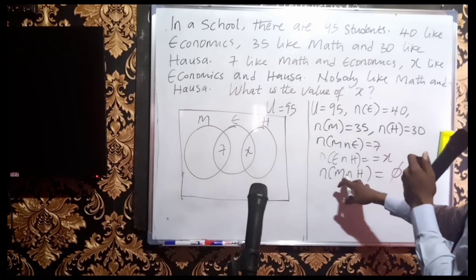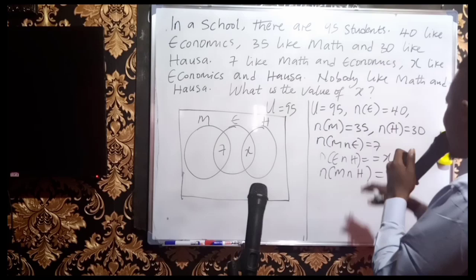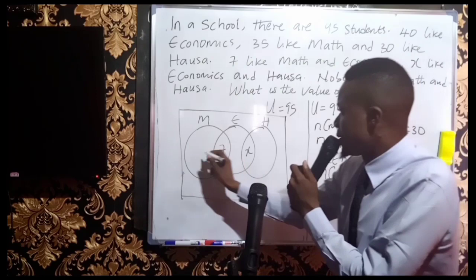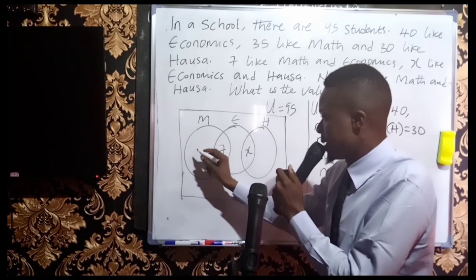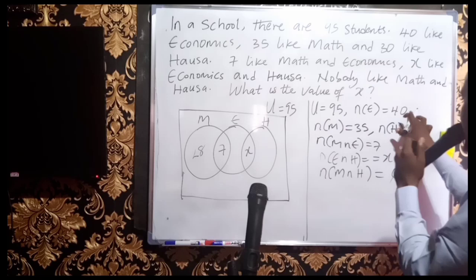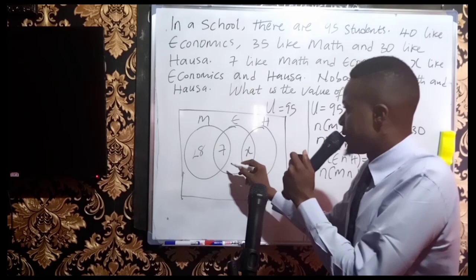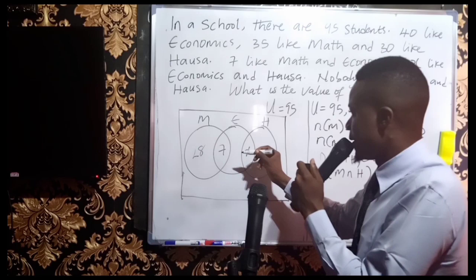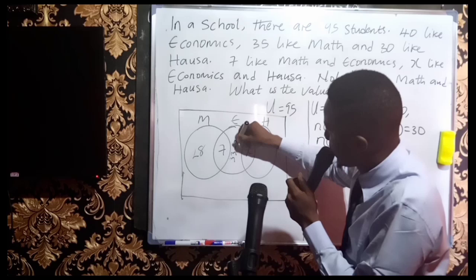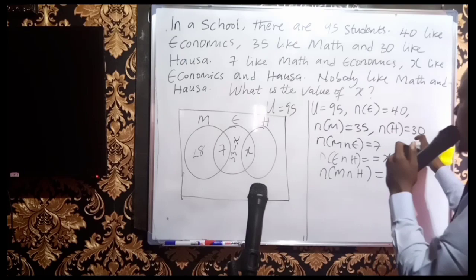For math only: 35 minus 7 gives 28. For economics: 40 minus 7 gives 33, then subtract X again, so the economics-only region is 33 minus X. For AUSA: only X falls into the AUSA intersection with economics, so the AUSA-only region is 30 minus X.